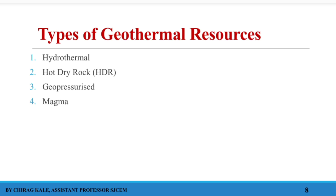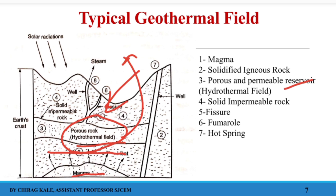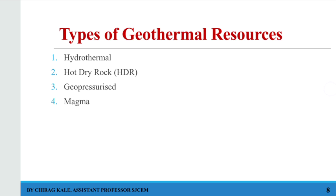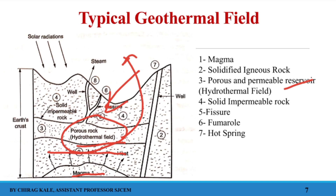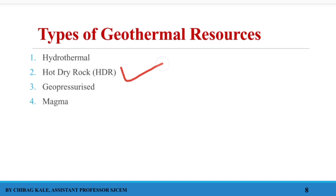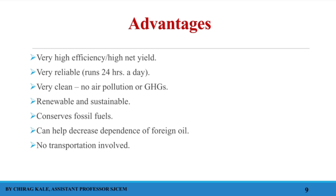There are four types of geothermal resources. First, hydrothermal — getting energy out of a cavity where we can find hot water as well as steam. Second, hot dry rock — if there is a cavity but no water, the rock temperature is still very high and we can use that. Third, geopressurized — where water is at high temperature and pressure, and both pressure and temperature are utilized to run a turbine. Fourth, magma — the hot liquid present inside the earth's core.